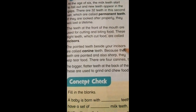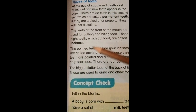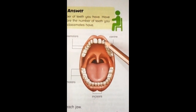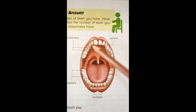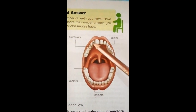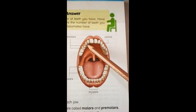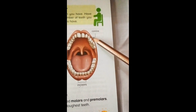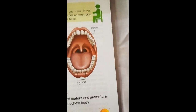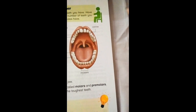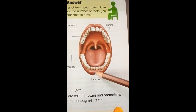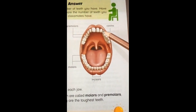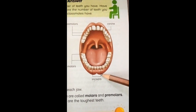The pointed teeth beside your incisors are called canine teeth. As shown in the picture, these pointed teeth are very sharp and they help to tear food. There are 4 canines — 2 in the upper jaw and 2 in the lower jaw.